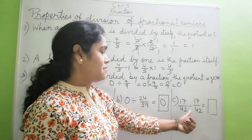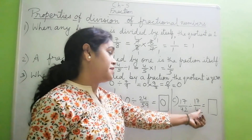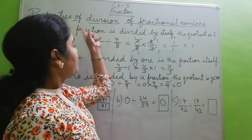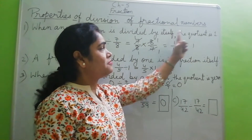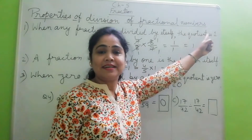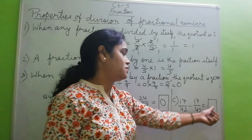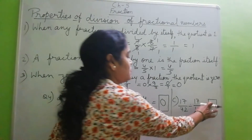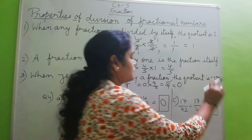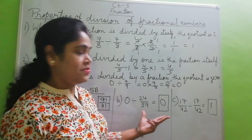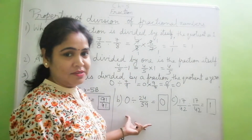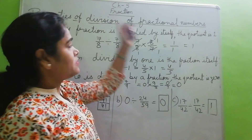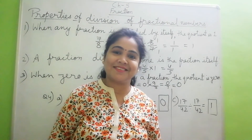Next: 17 by 42 is a fraction divided by itself. When any fraction is divided by itself, the quotient is 1. So here the quotient will be 1. This way we solve questions of fractions using the properties of division of fractional numbers.